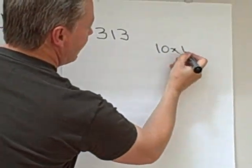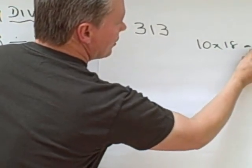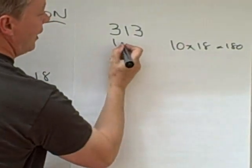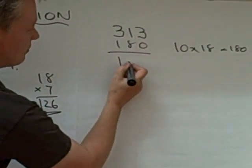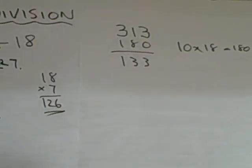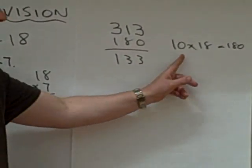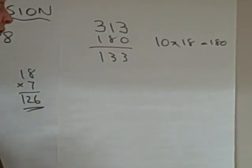Well, the first thing I know is that if I multiply 18 by 10, which is 180, I can take that 180 off. And that leaves me now 133. So I know that now I've got 10 lots of 18 so far.